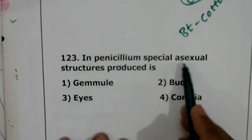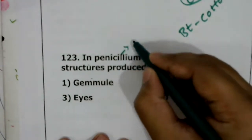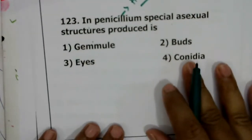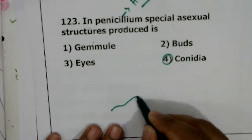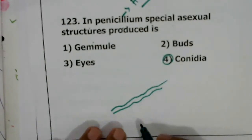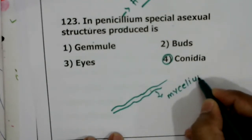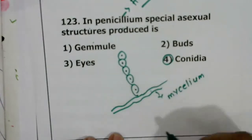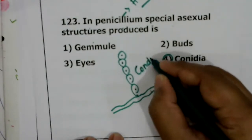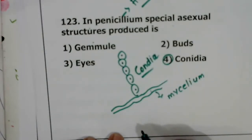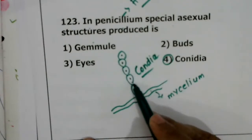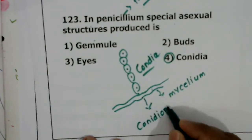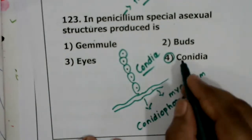Question 123: in Penicillium, special asexual structures produced are? Penicillium belongs to Ascomycetes and reproduces by conidia. The mycelium produces a long chain of conidia that are exogenous — not covered by any membrane. These long chains of conidia are present on special mycelia called conidiophores. The correct answer for question 123 is conidia.